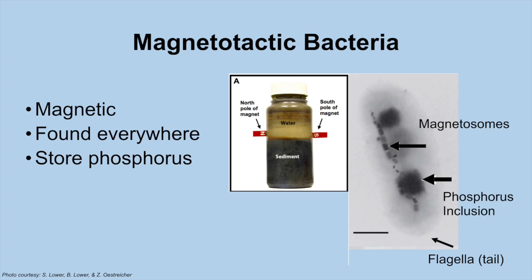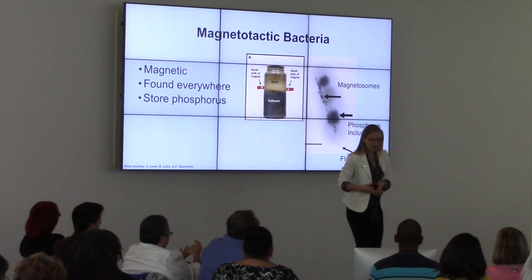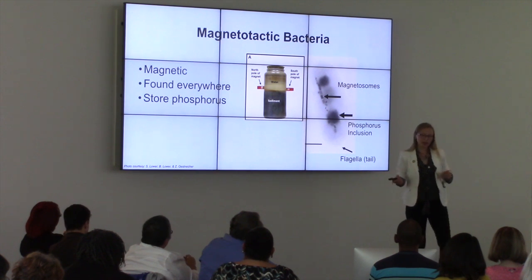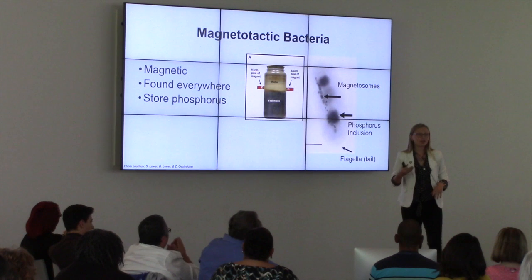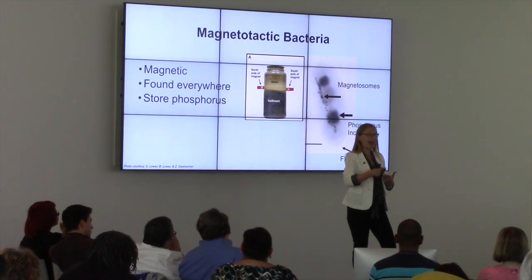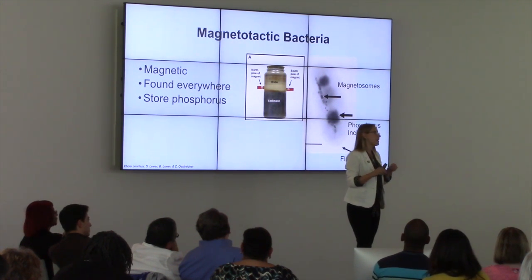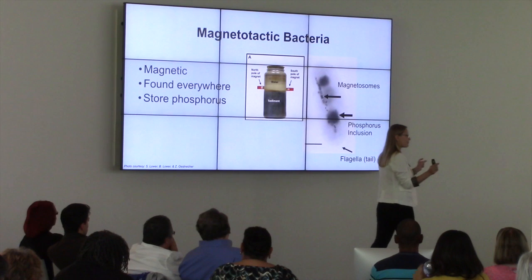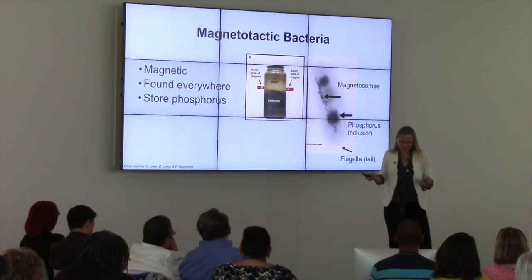Why should we care about that? Because we have too much phosphorus. A zoomed-up image of this bacteria shows those tiny circles — the magnetosomes — how the bacteria moves. That giant gray circle is a phosphorus inclusion, where all the phosphorus and nutrients get absorbed inside the bacteria. The tail is how the bacteria propels itself forward. If you collect a jar of water from Lake Erie — half sediment, half water — these bacteria live in the sediment. You can place a magnet on the side of the jar and actually extract them from the water; they move towards the magnets.